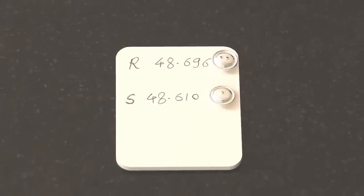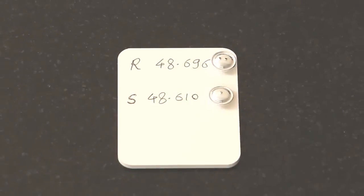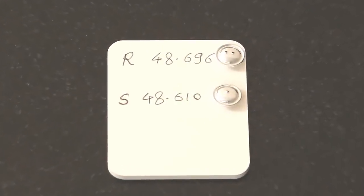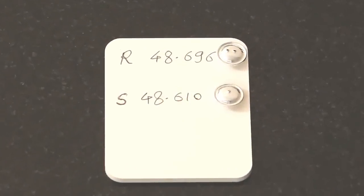DSC measurements are carried out with a reference and a sample crucible, each with a lid. In order to achieve good measurement results, the crucible and lid combinations weight on the sample and the reference side should not differ more than 0.2 milligrams.